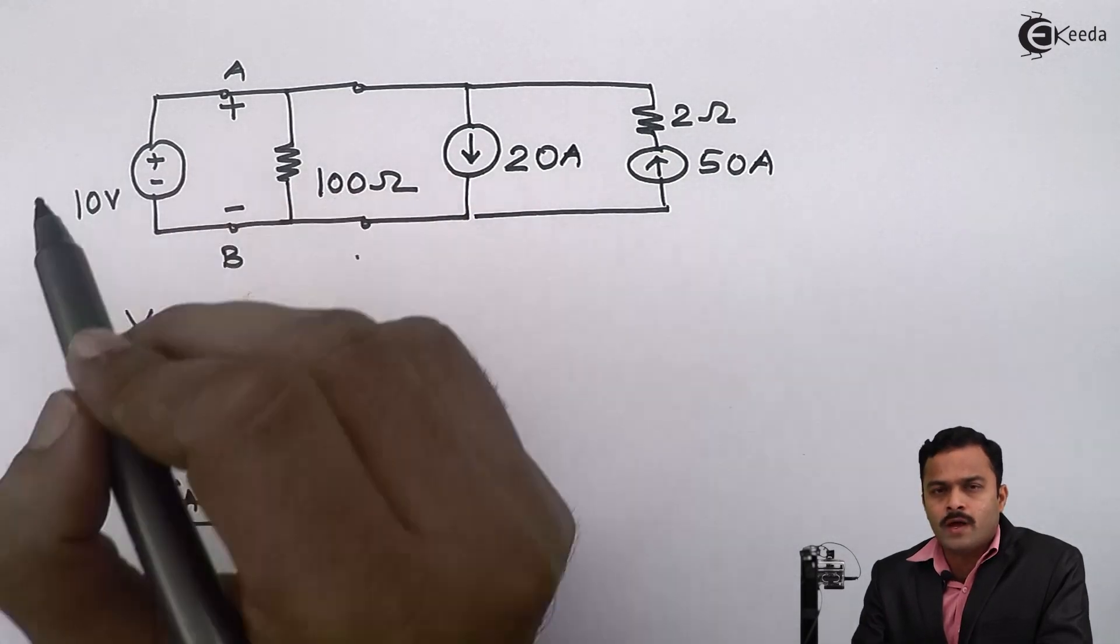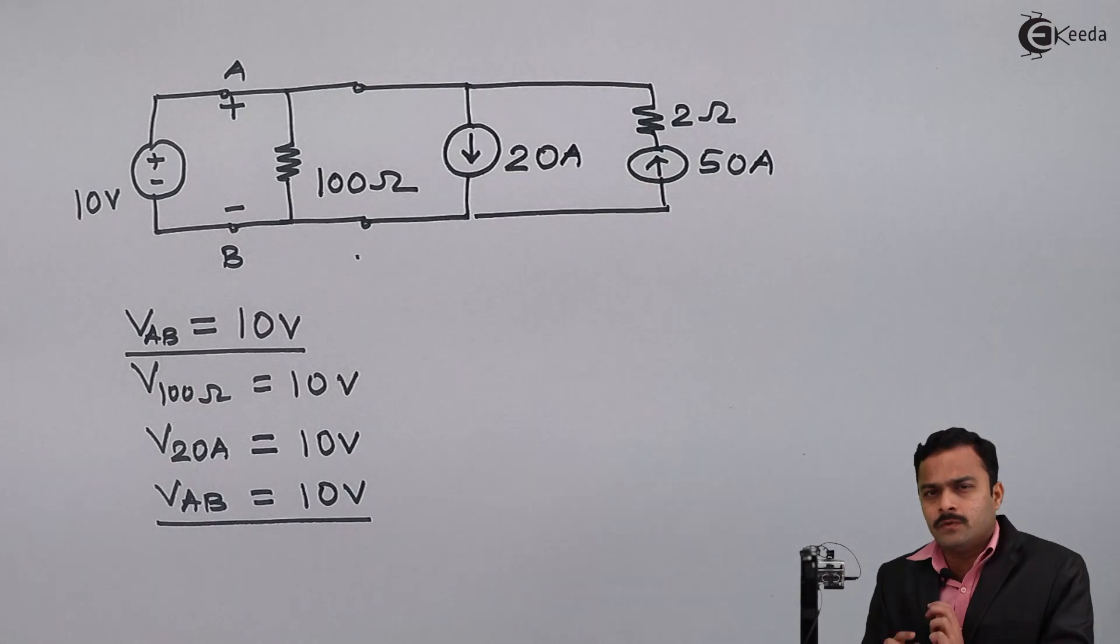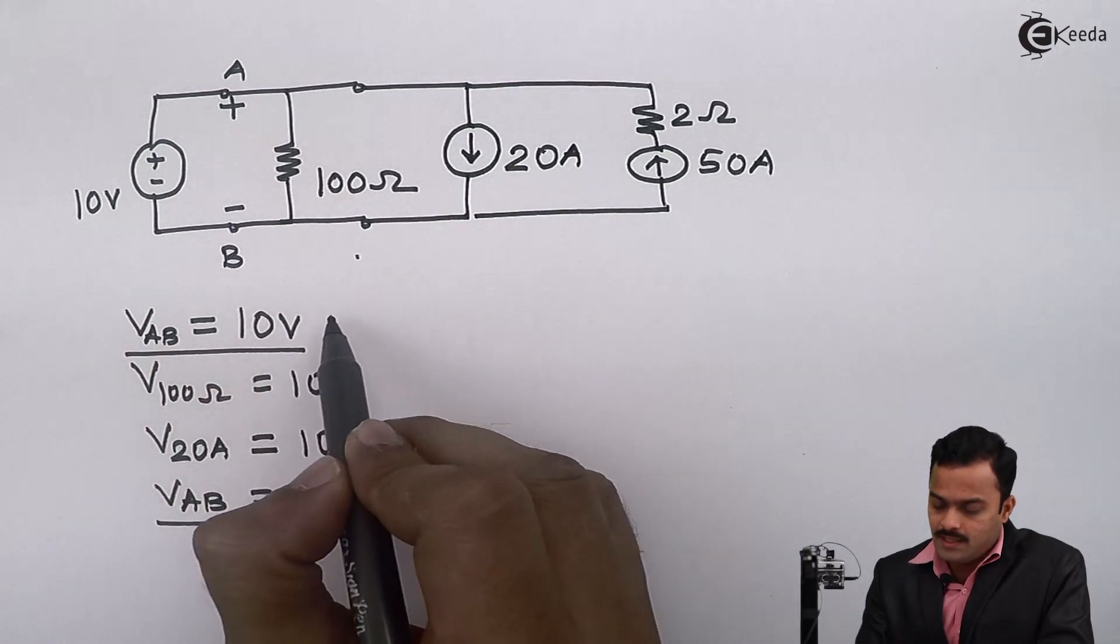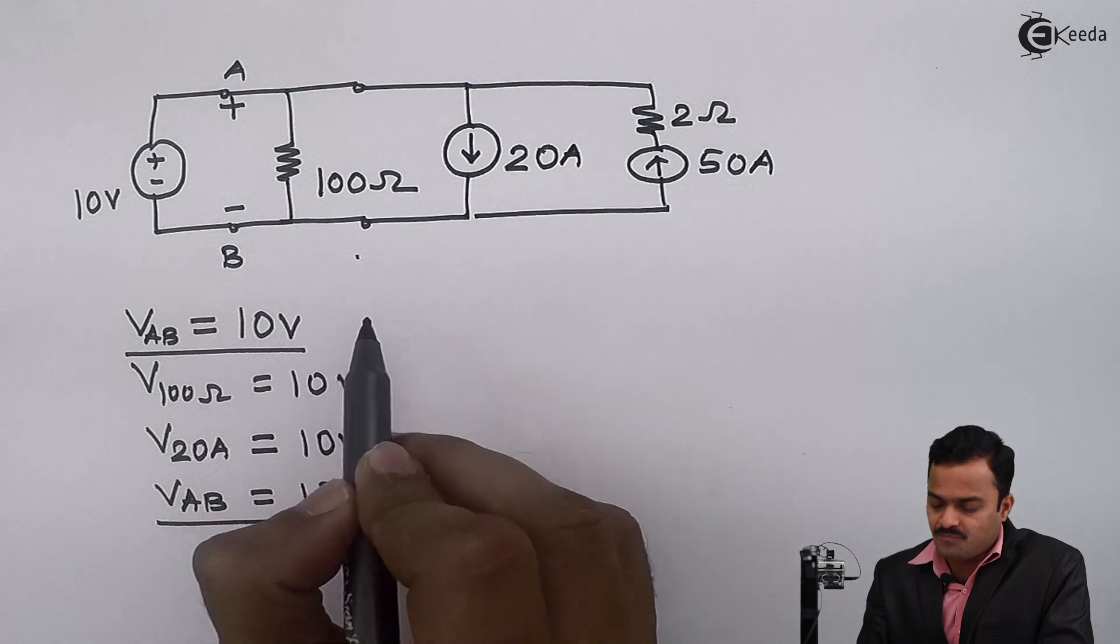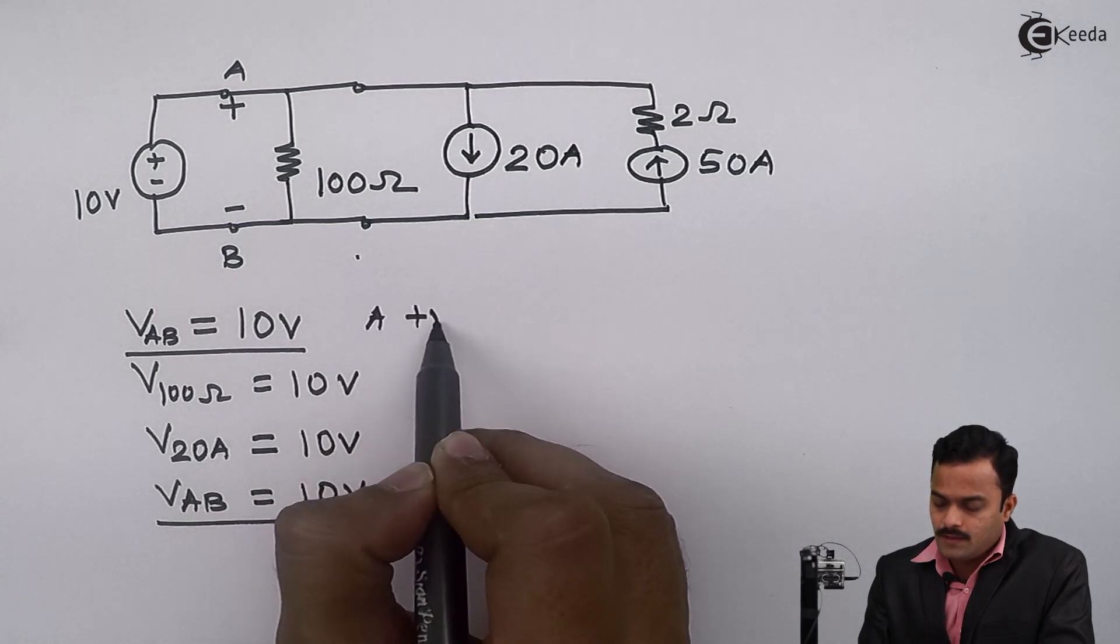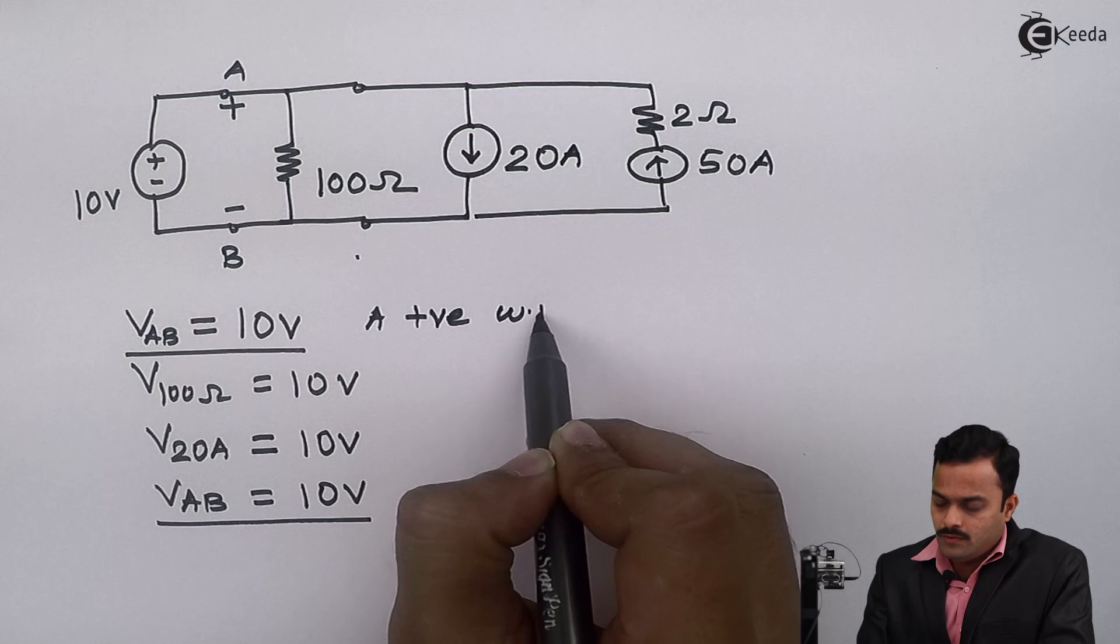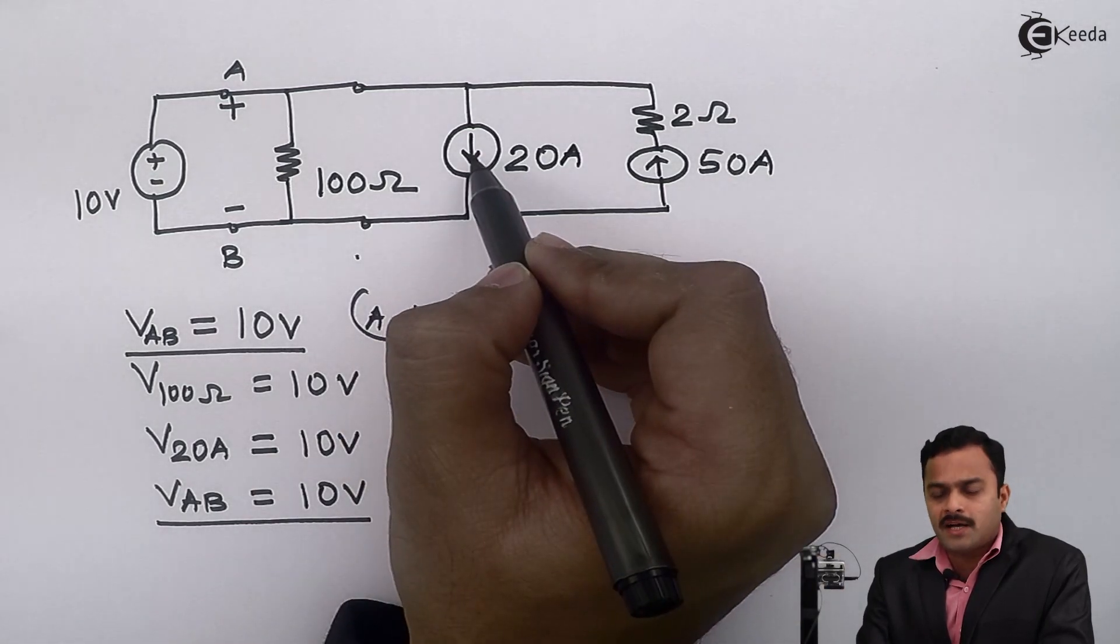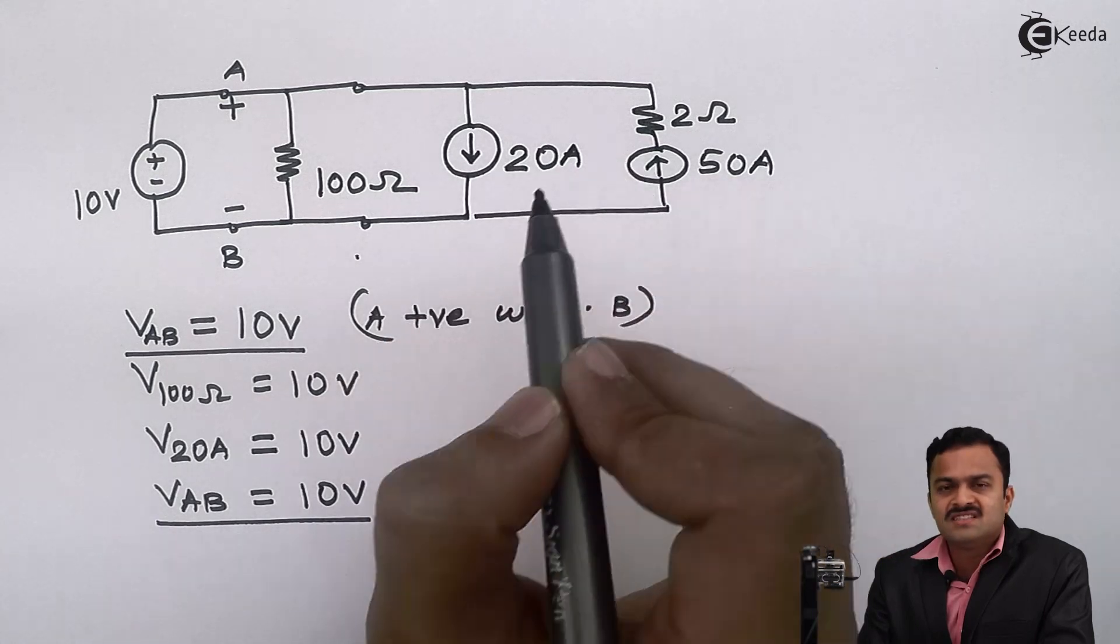So whenever a voltage source is connected between two points, it will fix up its voltage magnitude and at the same time polarity also. So here I say V_AB equals 10 volts, that means I'm considering A positive with respect to B. So even if I'm having a current source of opposite direction, still my answer will be 10 volts and polarity is A positive with respect to B.